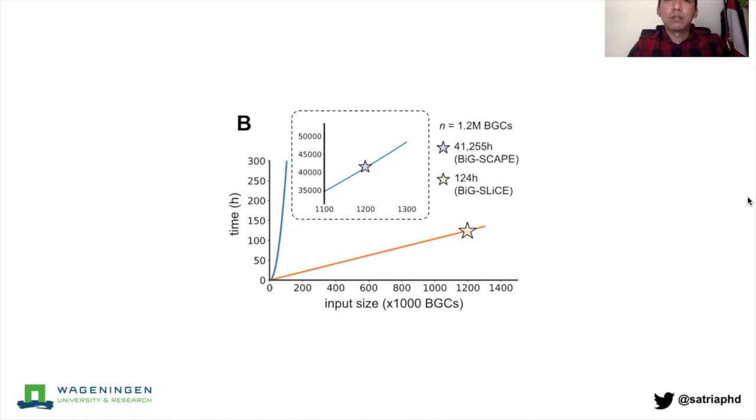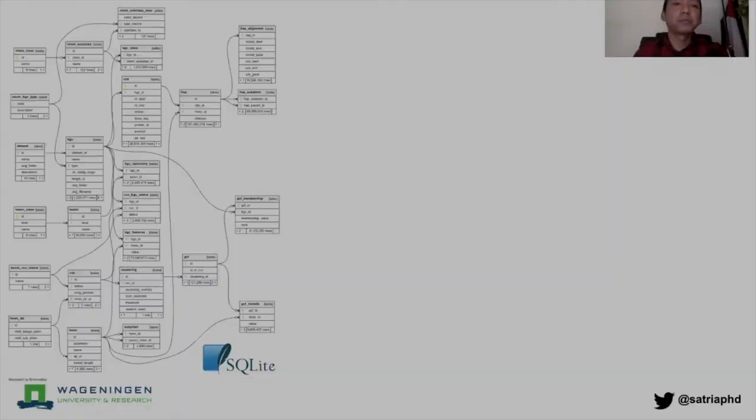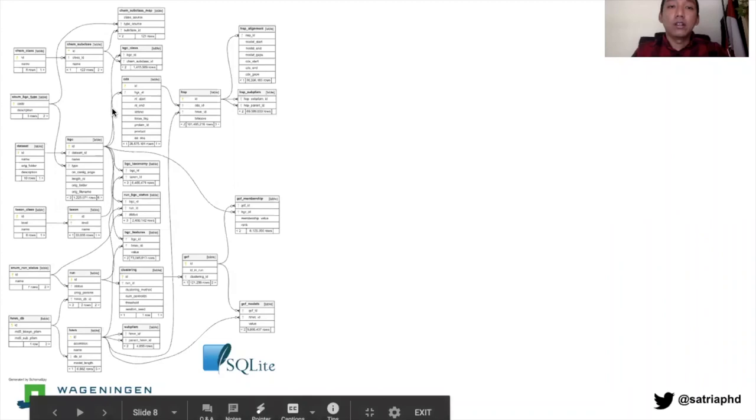Here you see that using our 36 core CPU server, we managed to perform this GCF analysis in roughly one week runtime. We store everything in SQLite database, which is a file-based database structure.